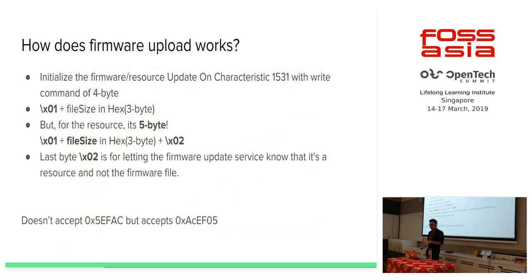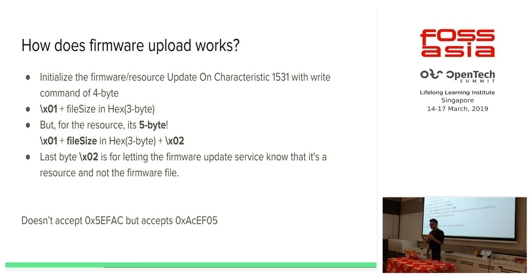From reverse-engineering the mobile app, I found it accepts four bytes to initialize the firmware update and five bytes for resources. If you're sending firmware data — like device name or software revision number — it goes in the FW file. If you're sending images or graphical resources, those go in the RES file. It first sends a byte 0x01 saying 'I have this file with this particular file size.' You then append 0x02 at the end to notify the update service that you're starting to send the resource. Detailed steps are on medium.com/yoga.